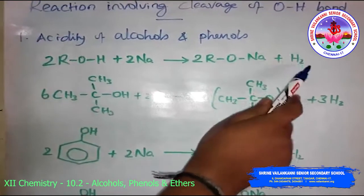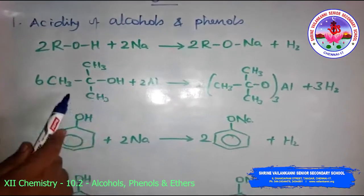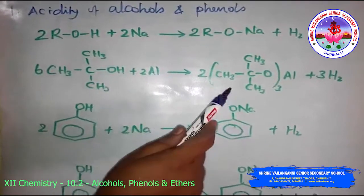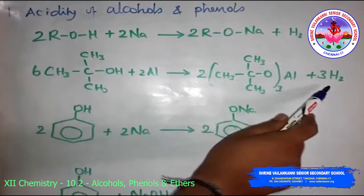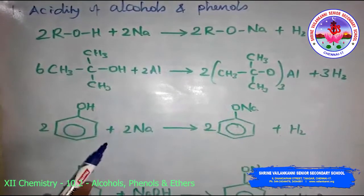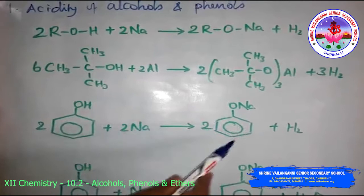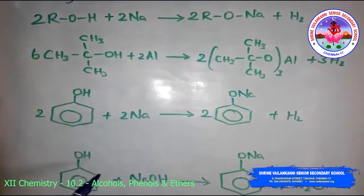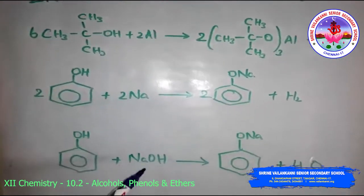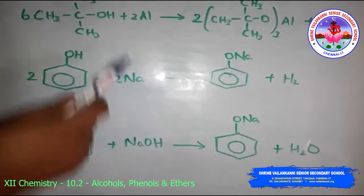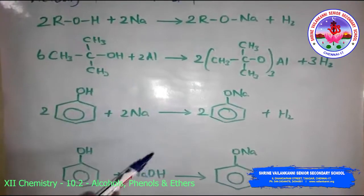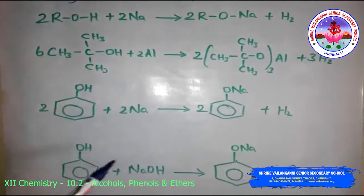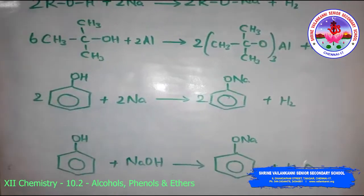For example, tertiary butyl alcohol reacts with aluminum to form aluminum tertiary butoxide and hydrogen gas. Phenol reacts with sodium metal to form sodium phenoxide. Additionally, phenols react with aqueous sodium hydroxide to form sodium phenoxide. These reactions show that alcohols and phenols are acidic in nature.